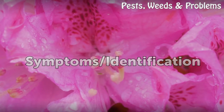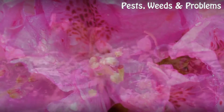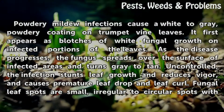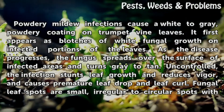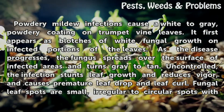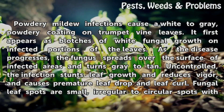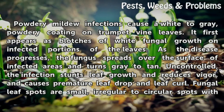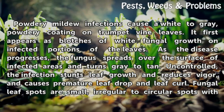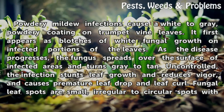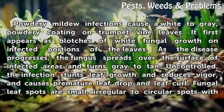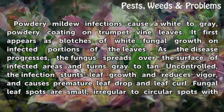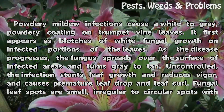Symptoms and Identification. Powdery mildew infections cause a white to gray powdery coating on trumpet vine leaves. It first appears as blotches of white fungal growth on infected portions of the leaves. As the disease progresses, the fungus spreads over the surface of infected areas and turns gray to tan.